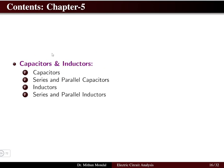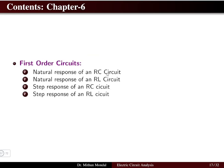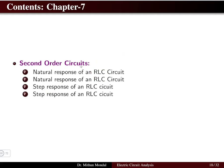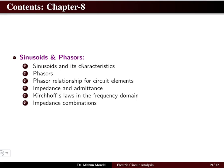Chapter 5 discusses capacitors and inductors and their series and parallel combinations. Chapters 6 and 7 cover transients: Chapter 6 is the first order circuit — either RC or RL — covering natural response and step response. Chapter 7 is the second order RLC circuit, also covering natural and step responses.